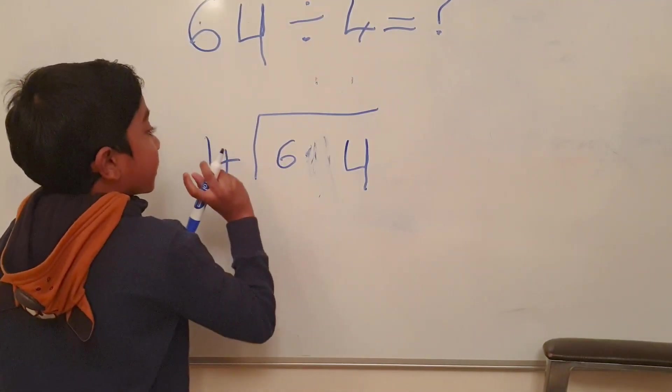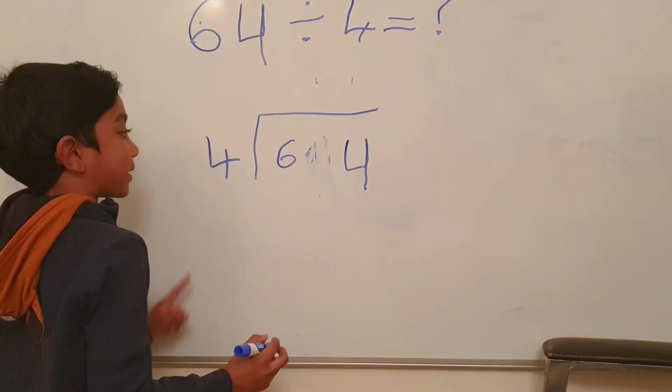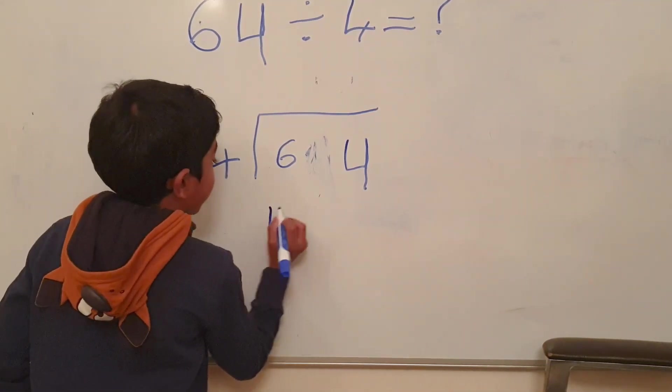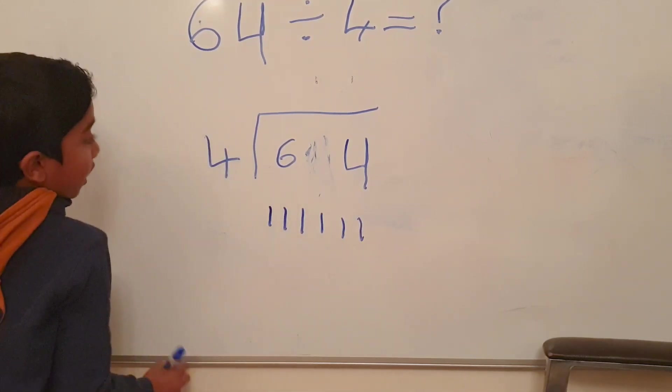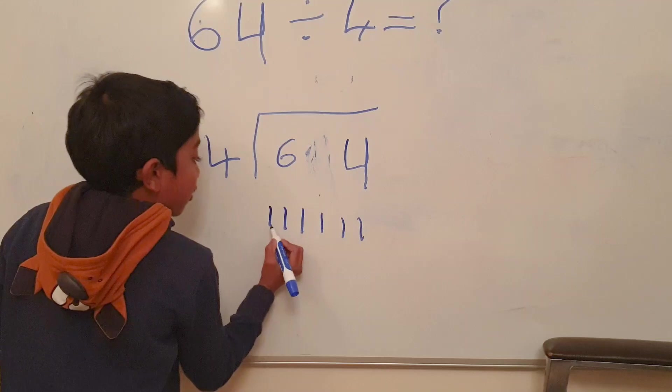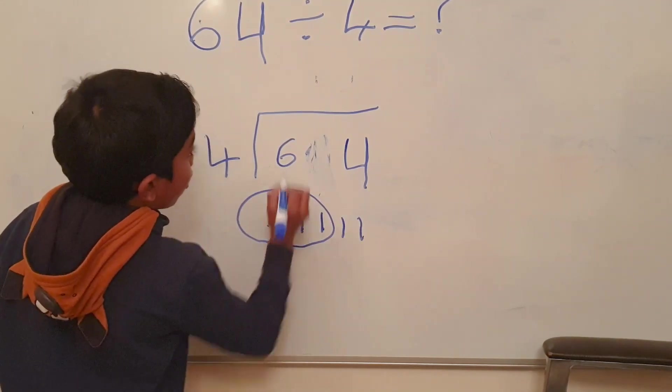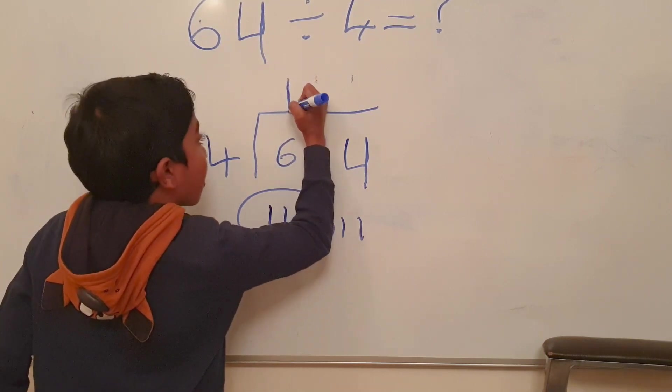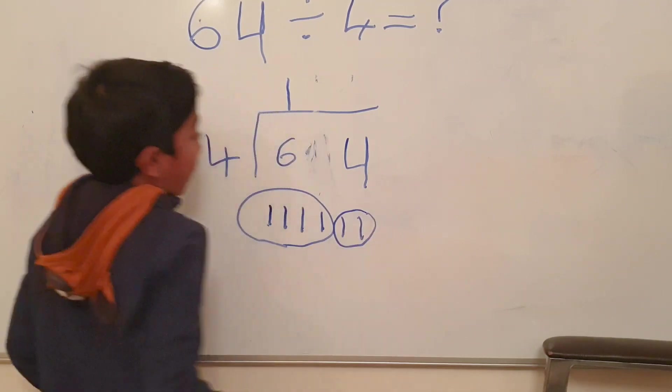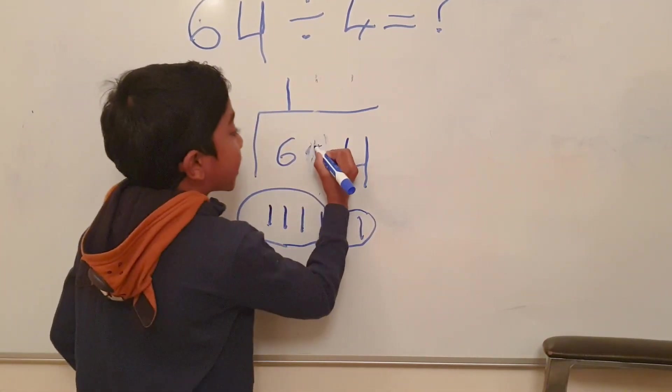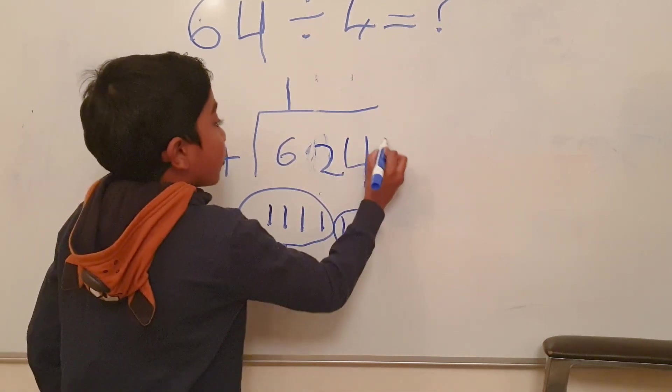Now here we have 6 people in the bus stop and I want to represent them as 6. How many 4's in 6? One group. One goes straight over 6. These 2 people couldn't get into the bus stop. So they have to stay with the other people in the bus stop. Now we have 24.